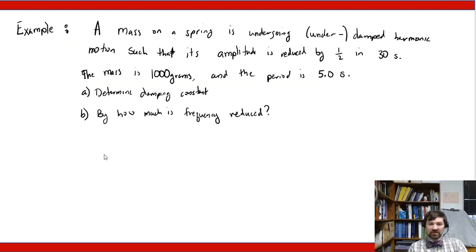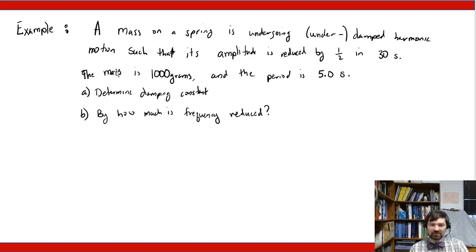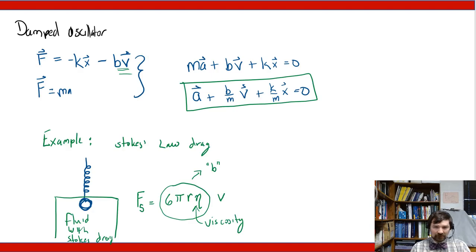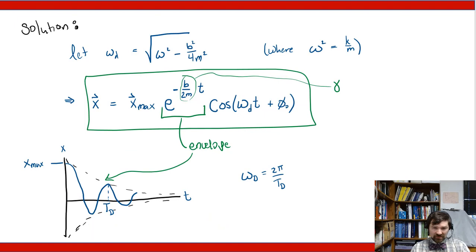Let's say we have a mass on a spring undergoing underdamped harmonic motion such that the amplitude decreases by 50% after 30 seconds. The mass is 1 kilogram and the period is 5 seconds. We want to know the damping constant and by how much the frequency has been reduced by the damping. For the damping constant: looking back at the solution, the amplitude envelope is e to the negative b over 2m times t.